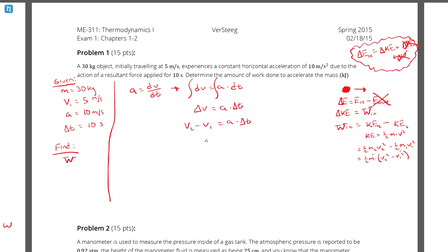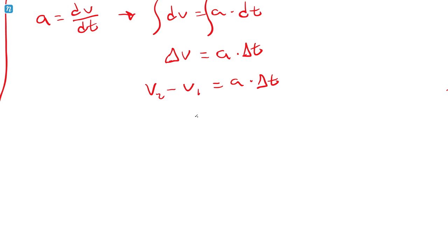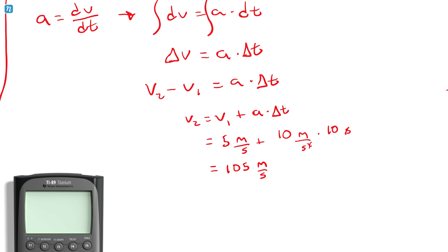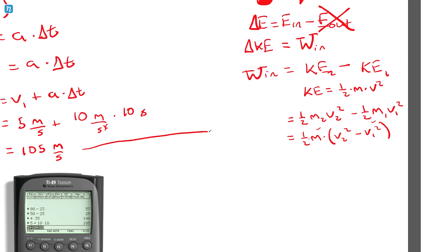Delta v is v2 minus v1, so v2 equals v1 plus acceleration times delta t. That's 5 meters per second plus 10 meters per second squared times 10 seconds. The seconds squared cancels to just seconds, giving 5 plus 100 equals 105 meters per second. Confirming with a calculator: 5 plus 10 times 10 equals 105.